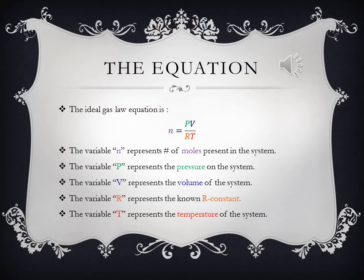The variable n represents the number of moles present in the system. The variable P represents the pressure on the system. The variable V represents the volume. The variable R represents the R-constant. And the variable T represents the temperature of the system.